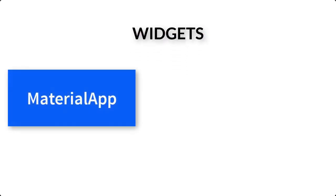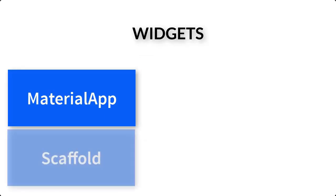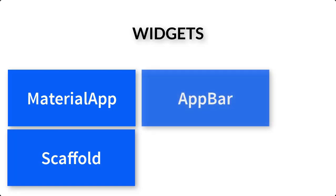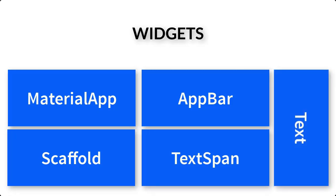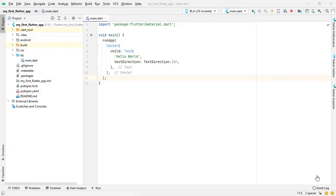The widgets we are going to cover in this video: first is the MaterialApp widget, then the Scaffold widget inside MaterialApp, and inside Scaffold we will create the AppBar widget. After that we will jump to the Text and TextSpan widgets — first the Text widget, then the TextSpan widget. So let's quickly get started.